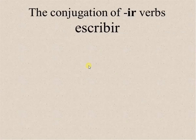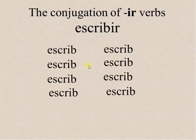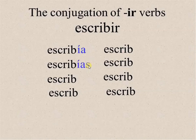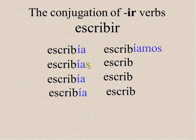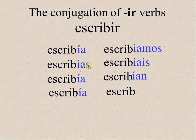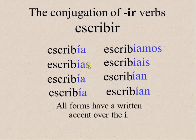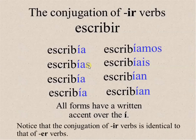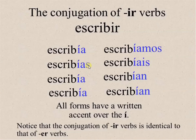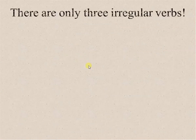The conjugation of IR verbs in the imperfect — for example, escribir, to write. Start with the stem. All forms have a written accent over the I. What did you notice? Well, the conjugation of IR verbs is identical to that of ER verbs — so that's good for us.